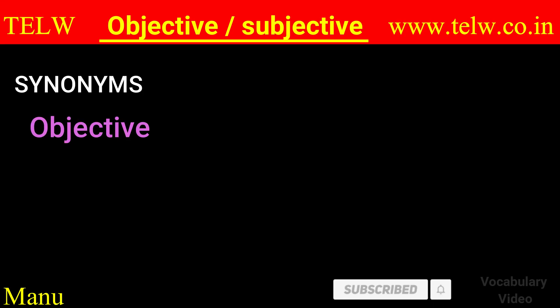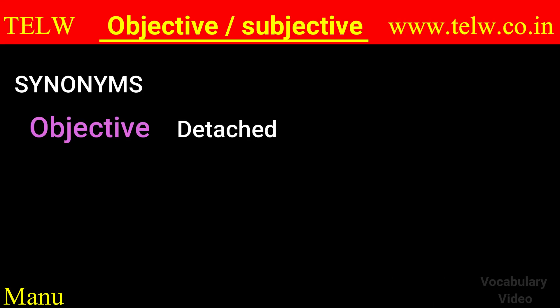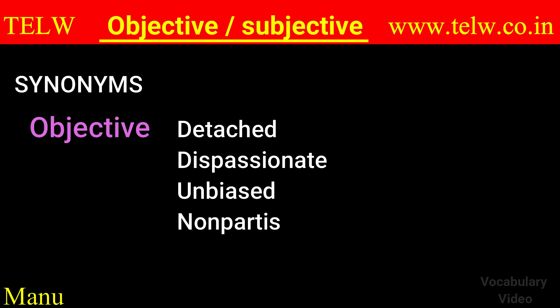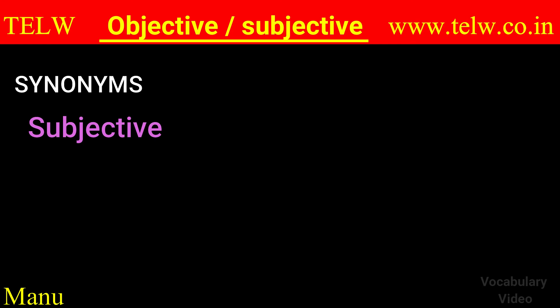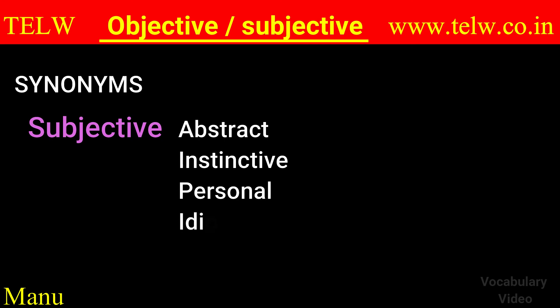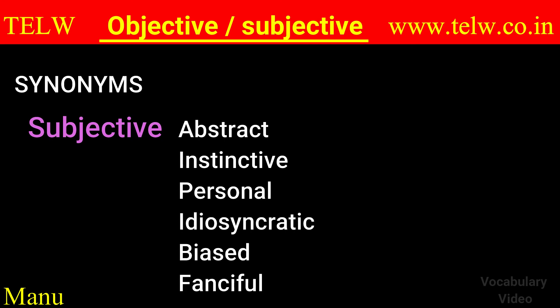Now let's look at some synonyms. For objective: detached, dispassionate, unbiased, non-partisan, open-minded, disinterested. And for subjective: abstract, instinctive, personal, idiosyncratic, biased, fanciful.